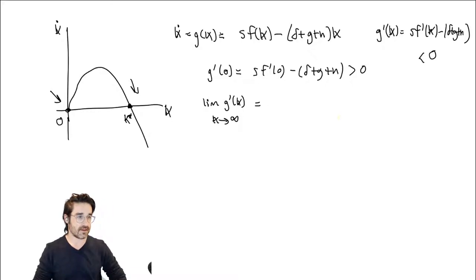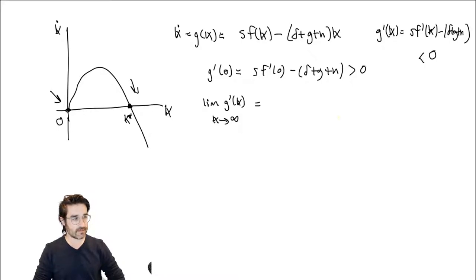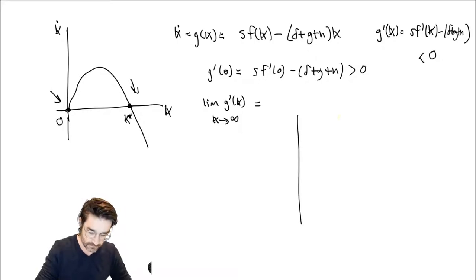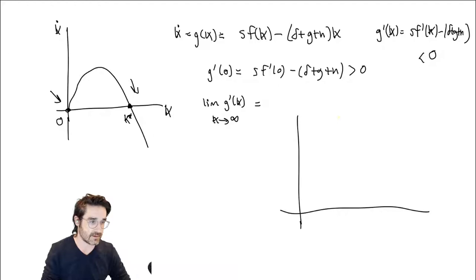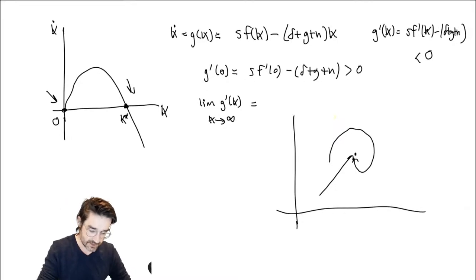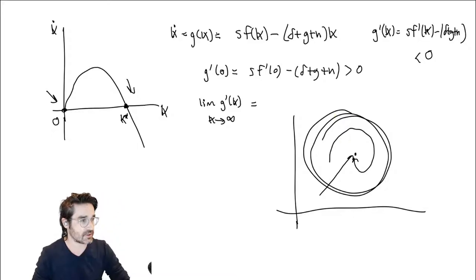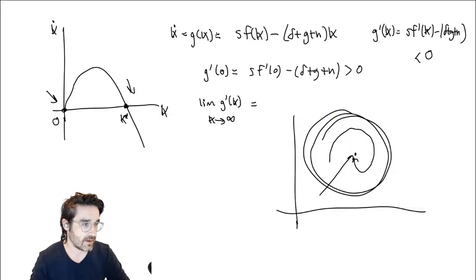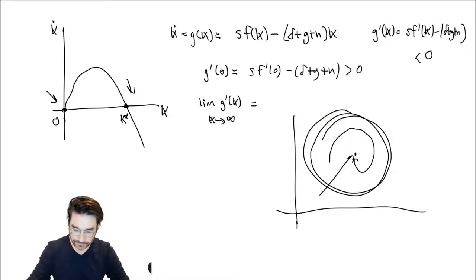Stability in both local and global sense is relatively simple in a 1D case. Once you go to two dimensions, things get more interesting because you can have more exotic behavior — you can converge directly, take the long way, or in principle keep orbiting the steady state. In the 1D world you either go there or you don't. But in 2D there's more room to move, so you can orbit or slowly decay toward something.